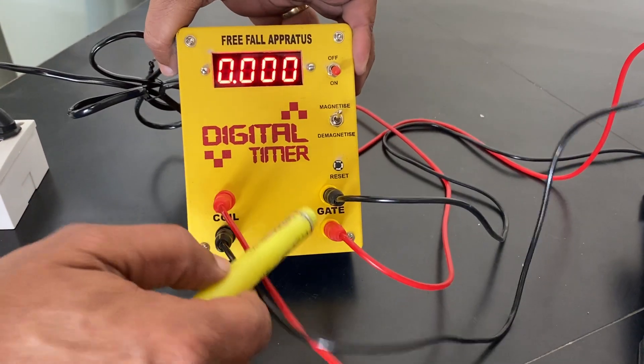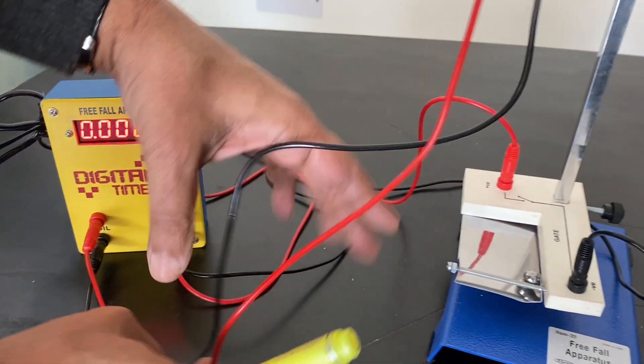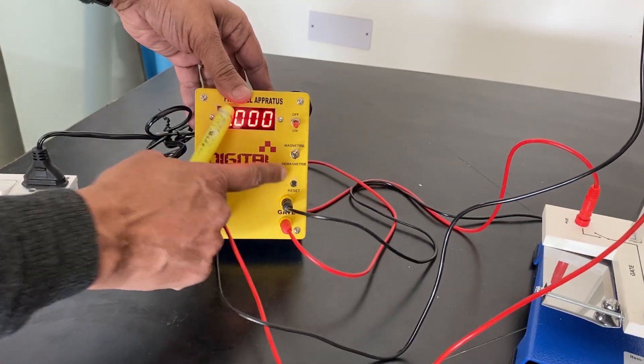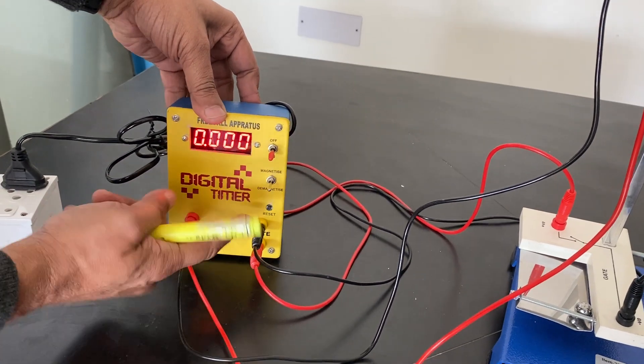It has written as coil and gate. We connect the two wires with the gate. See these two connected and there is a reset button. You can reset it.